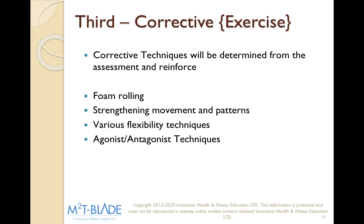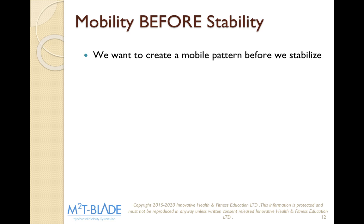Last but not least is our corrective care program. Whenever we're doing instrument-assisted soft tissue mobilization, we always want to help strengthen that area with our corrective care program. Corrective techniques are determined from the assessment and reinforce movement. We need to retrain the body — if the body has been injured, it's going to compensate around that injury. We're going to show you agonist-antagonist retraining techniques at the very end. Our corrective care program includes foam rolling, strengthening movement patterns, various flexibility techniques, and agonist-antagonist retraining. We always go mobility before stability — we want to create a mobile pattern before we stabilize it.